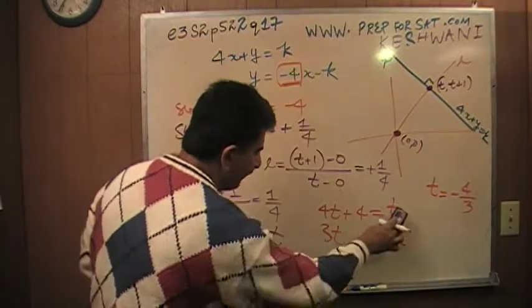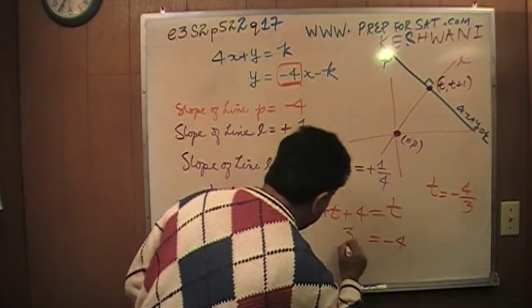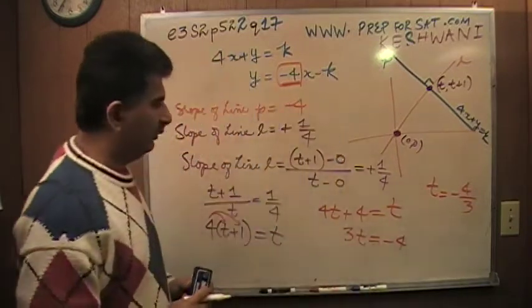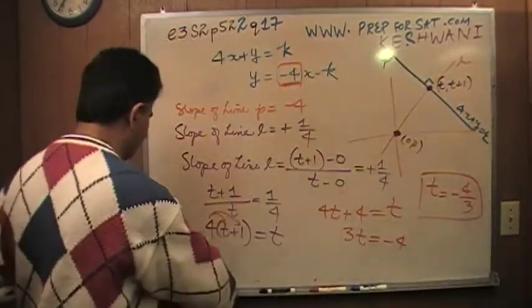If you bring T to the other side, we get four T minus T. It gives me three T equals negative four. T must equal negative four over three. That's my answer.